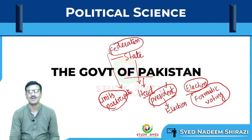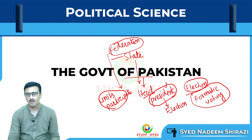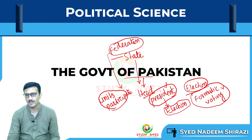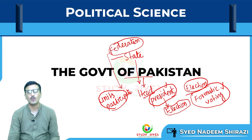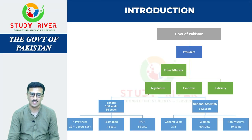Iske election mein jo doosre units hain — Punjab hai, Sindh hai, Balochistan hai, KPK hai — unki assemblies kis tarah se, kaunsa formula hai? Ek formula jo hai, woh formulaic voting hoti hai jiske zariye se iska election hota hai president ka. Toh let's start — kis tarah se woh sara inshallah dekhte hain.